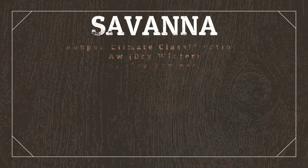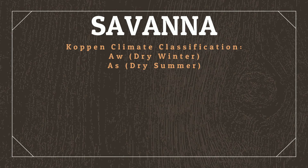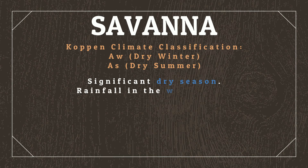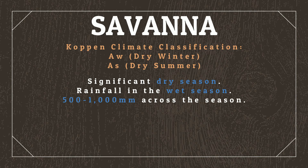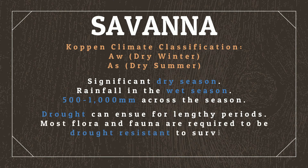Savannas, according to the Koppen Climate Classification System, are classified as tropical areas with a significant dry season, but that do experience at least some rainfall in the wet season, which is usually the summer, bringing 500 to 1,000 millimetres across the season. This rainfall allows for flora and fauna to be present.